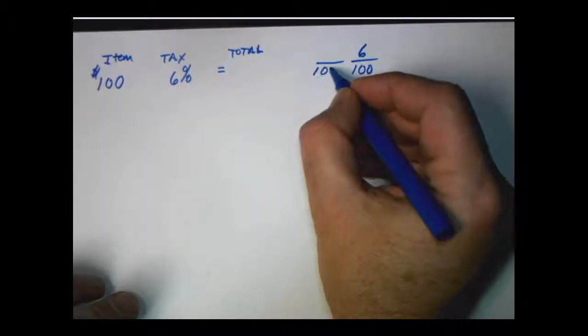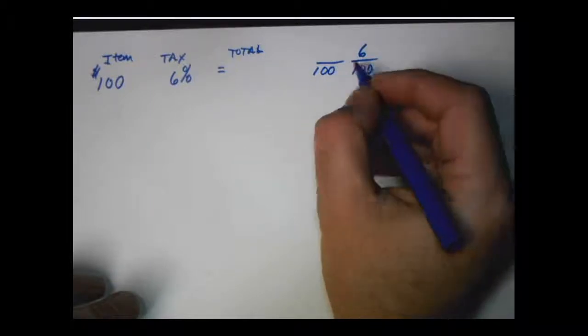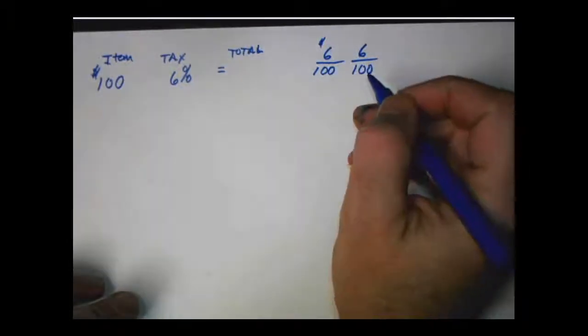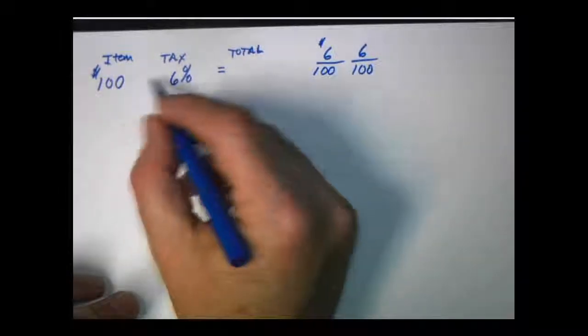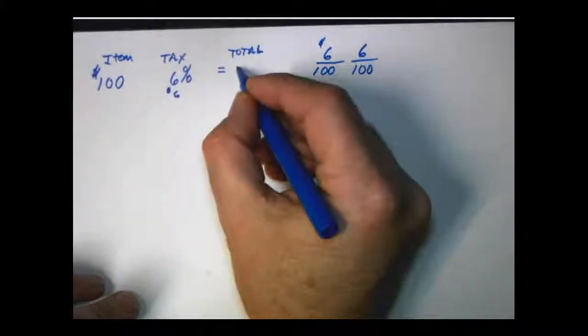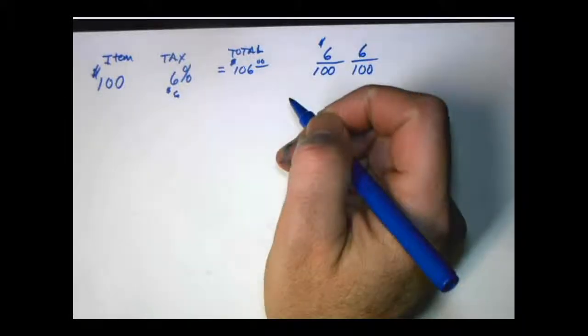The item is the whole. Remember when we have story problems the whole is going to go on the bottom. We're looking for the tax so we would cross multiply divide and we would get $6 as the tax. So our tax is 6% and in this case since the item was $100 we're going to have $6 tax for a total of $106. And that's how much we would write the check for.